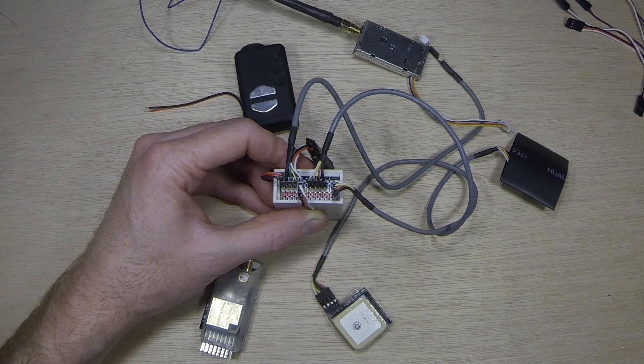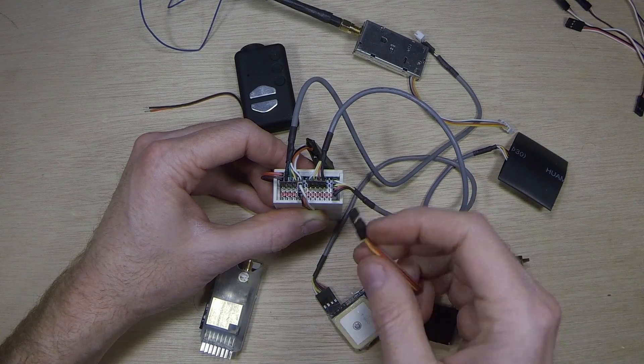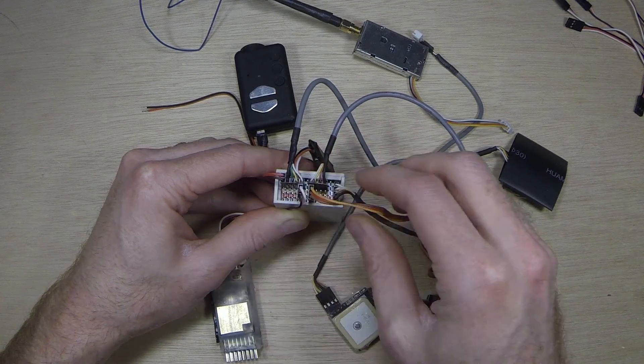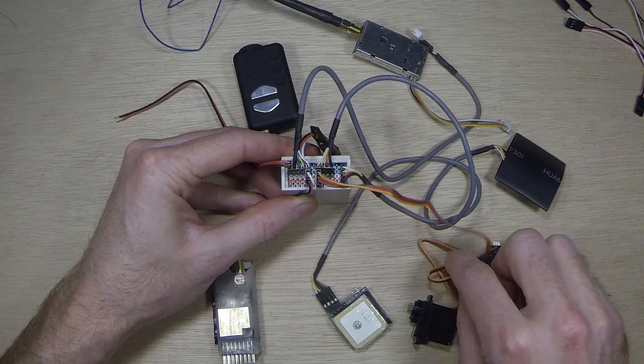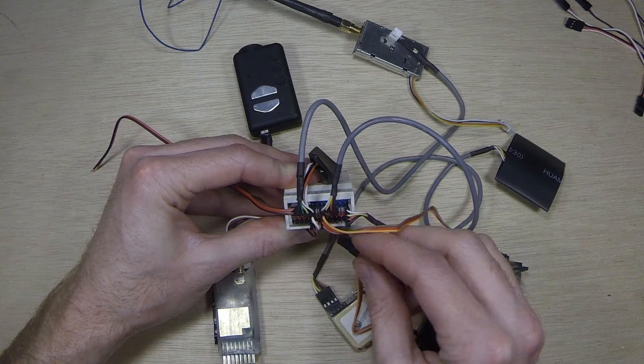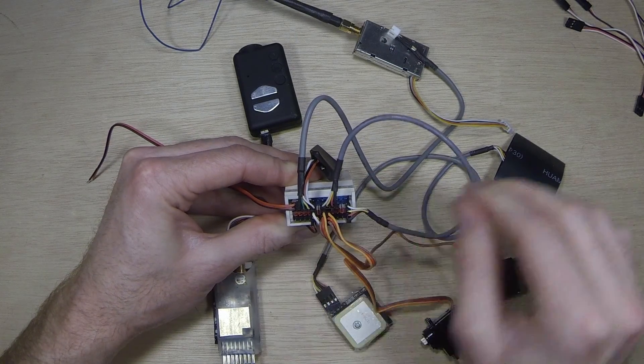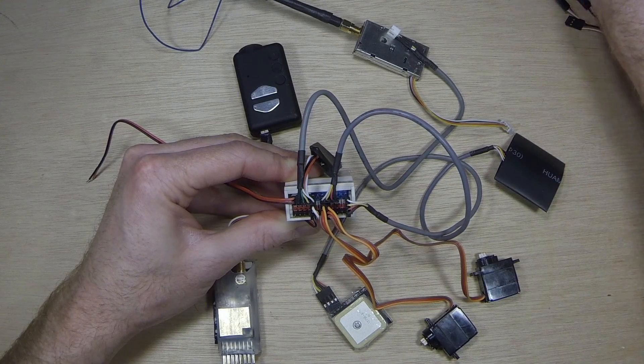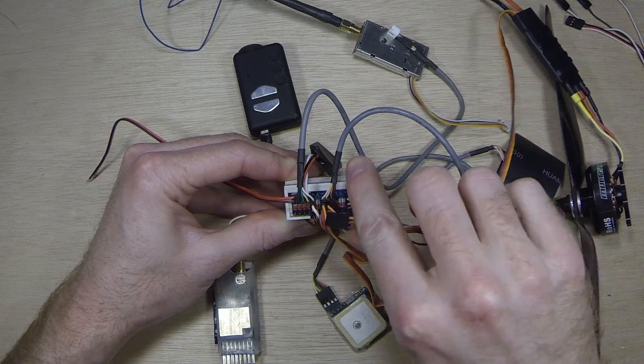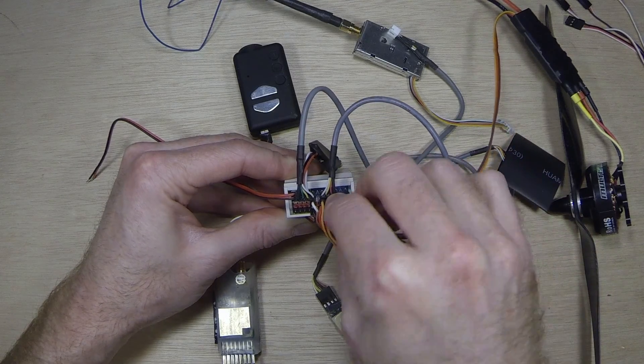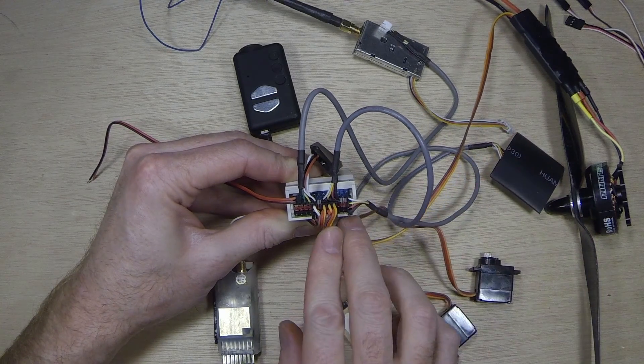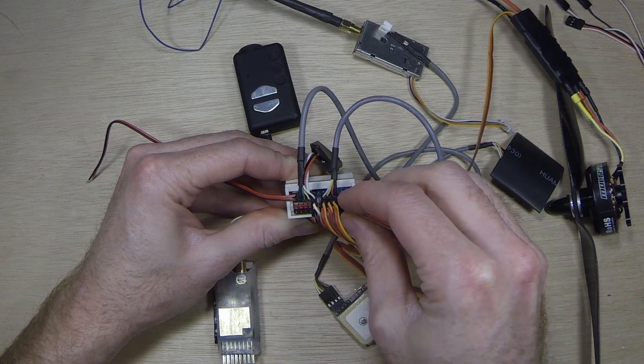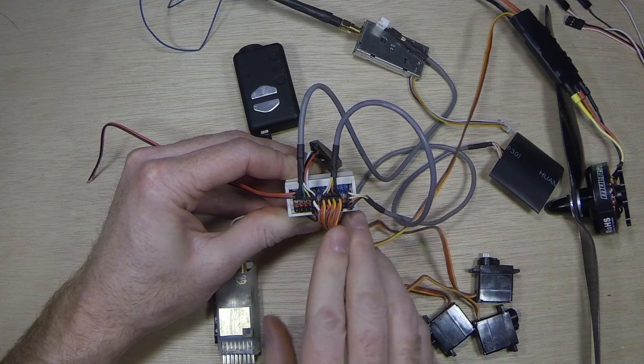Now, you can take your servos and plug them in for your aileron here and your elevator. And then, you would plug a throttle line in. So, I'll use my ESC over here. So, there's the throttle wire. And then, you would plug in your last servo, which is your rudder. All connections are ready.